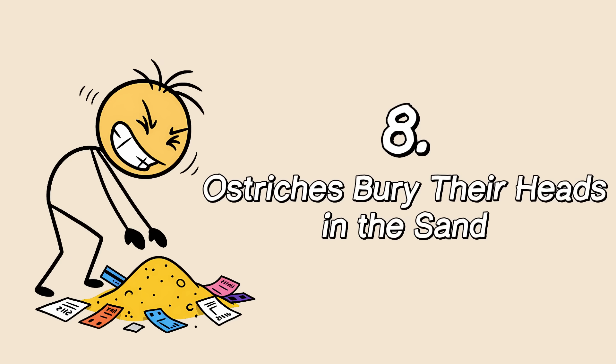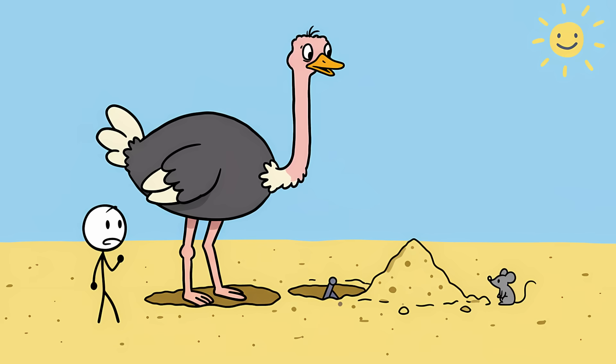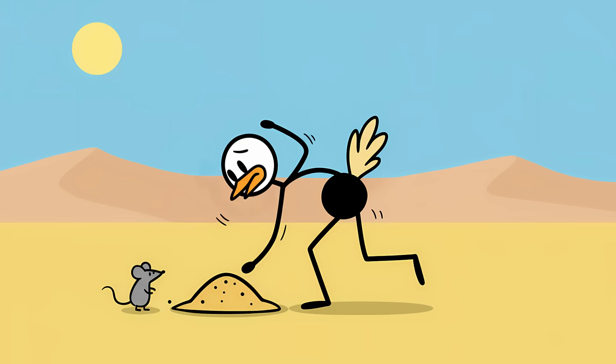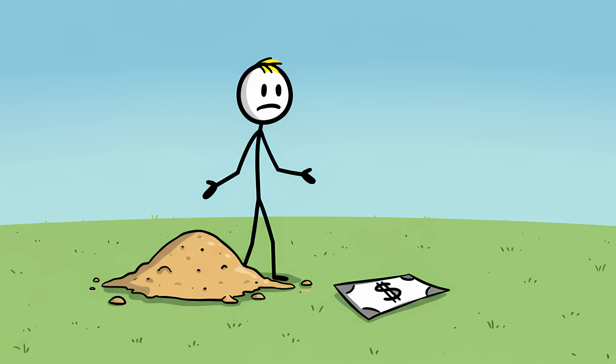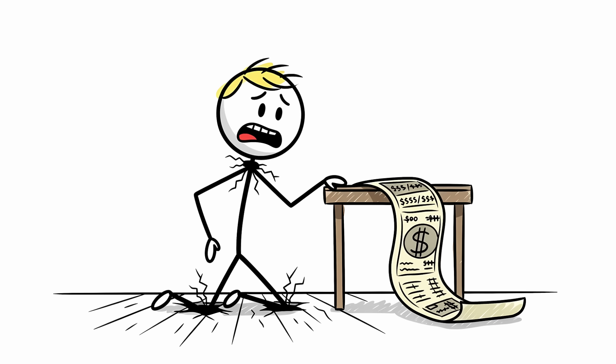Number eight. Ostriches bury their heads in the sand. Picture it. A cartoon ostrich, spooked by a tiny mouse, frantically digs a hole and shoves its entire head into the sand, convinced it has achieved perfect invisibility. It's an image so deeply embedded in our culture that burying your head in the sand has become a universal metaphor for willful ignorance. If it can't see the problem, the problem doesn't exist.